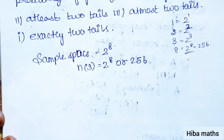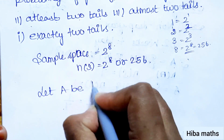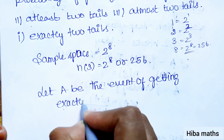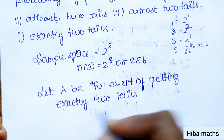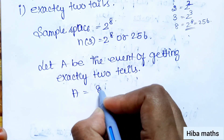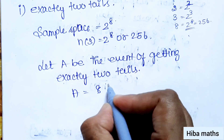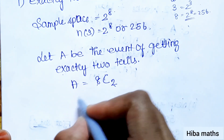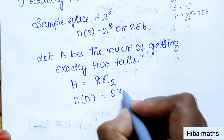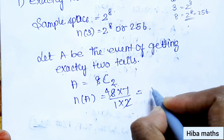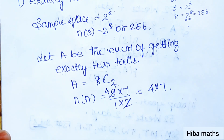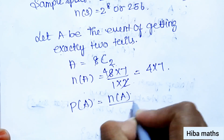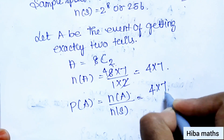Part one — exactly 2 tails. Let A be the event of getting exactly 2 tails. We have 8 coins total, and we need to choose 2 positions for tails. So N(A) equals 8C2. Solving: 8 into 7 divided by 1 into 2 equals 28. So N(A) equals 28.